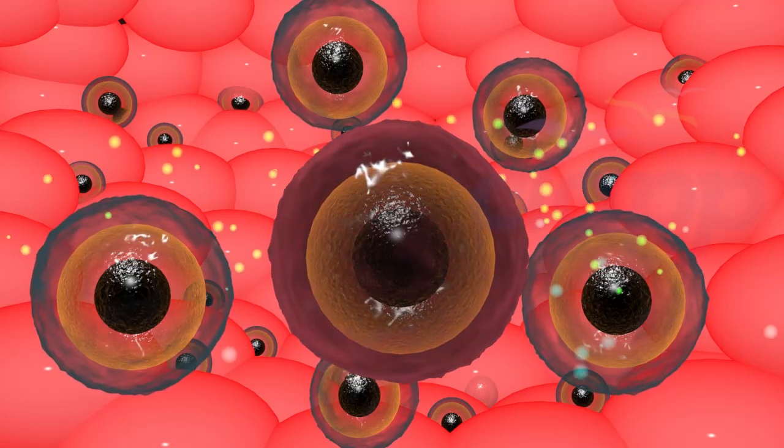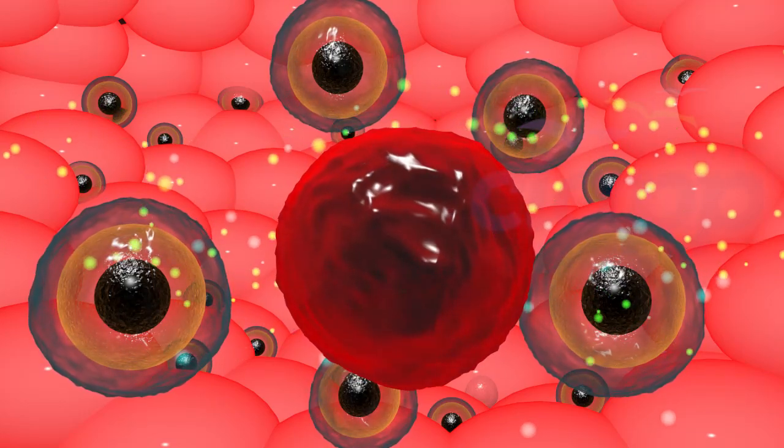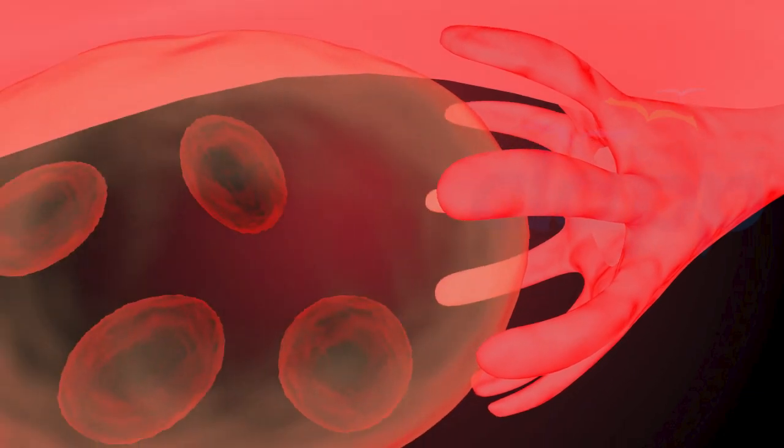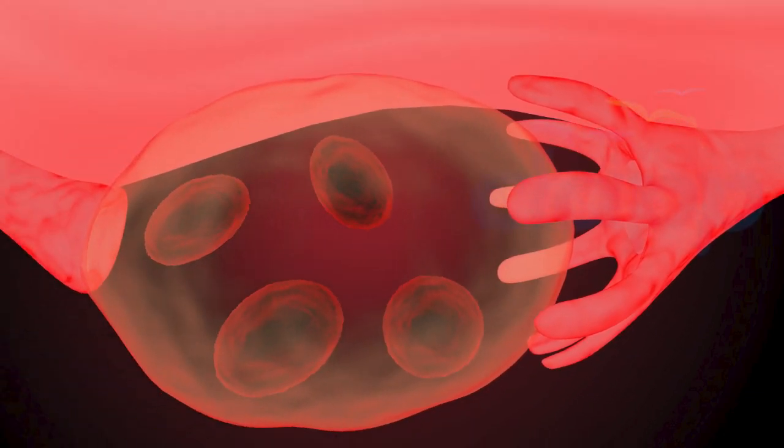The follicles that don't ovulate are cysts that form on the ovary with PCOS. Multiple cysts on the ovary represent past failed follicular ovulation events and are characteristic of PCOS.